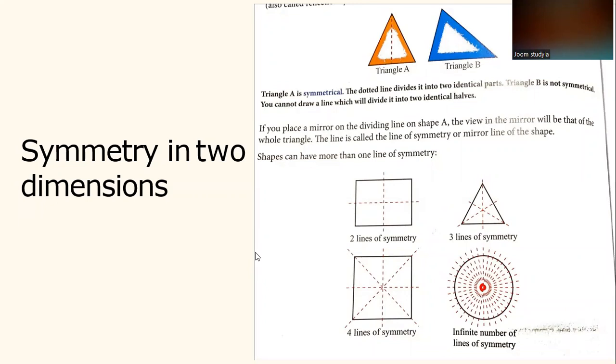Triangle A is symmetrical. The dotted line divides it into two identical parts. Triangle B is not symmetrical. You cannot draw a line which will divide it into two identical halves. If you place a mirror on the dividing line on shape A, the view in the mirror will be that of the whole triangle. The line is called the line of symmetry or mirror line of the shape.